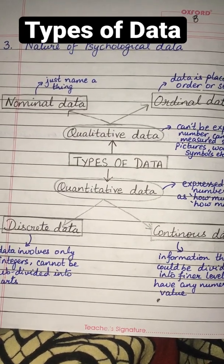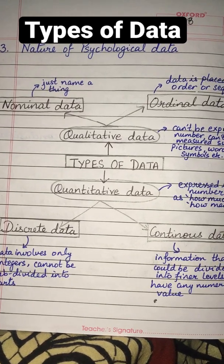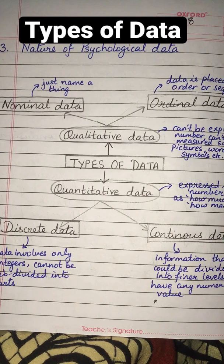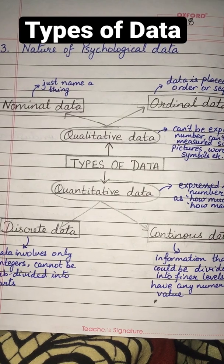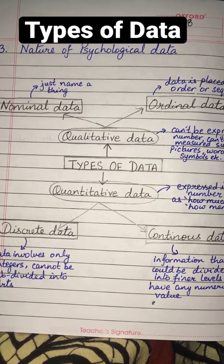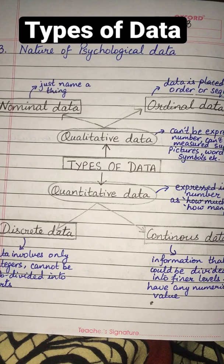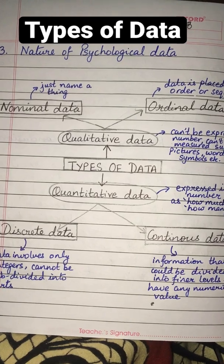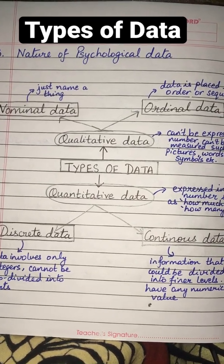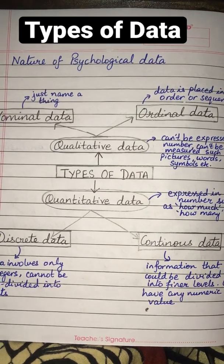Continuous data is information that could be divided into finer levels and can have any numeric value, such as temperature in a city, which could be 23 degrees Celsius, or 23.4, or 23.6 degrees Celsius.